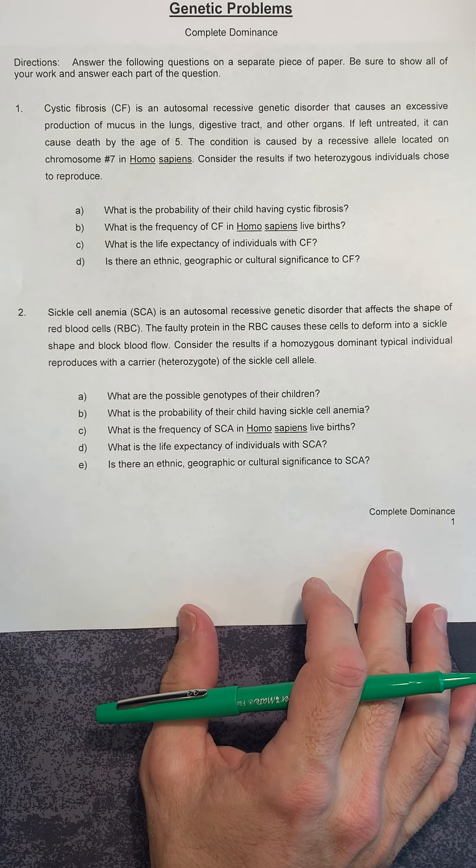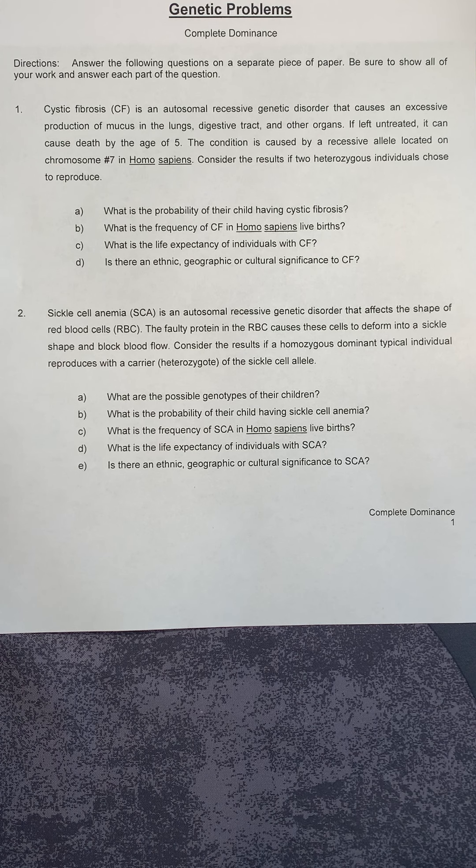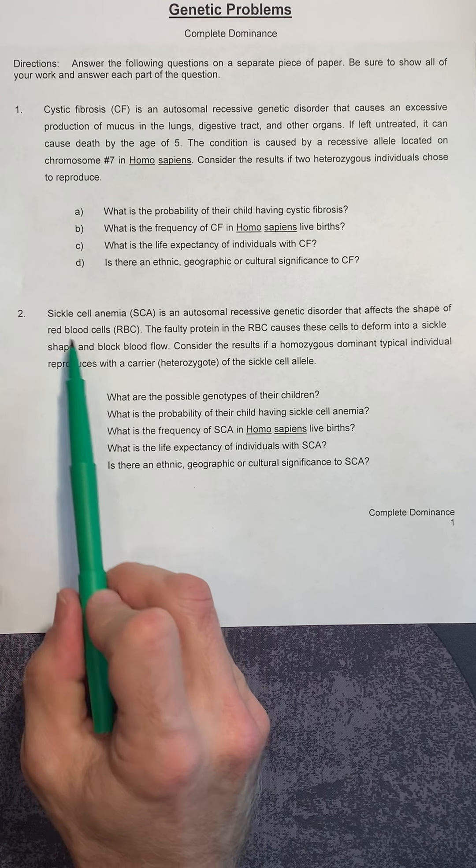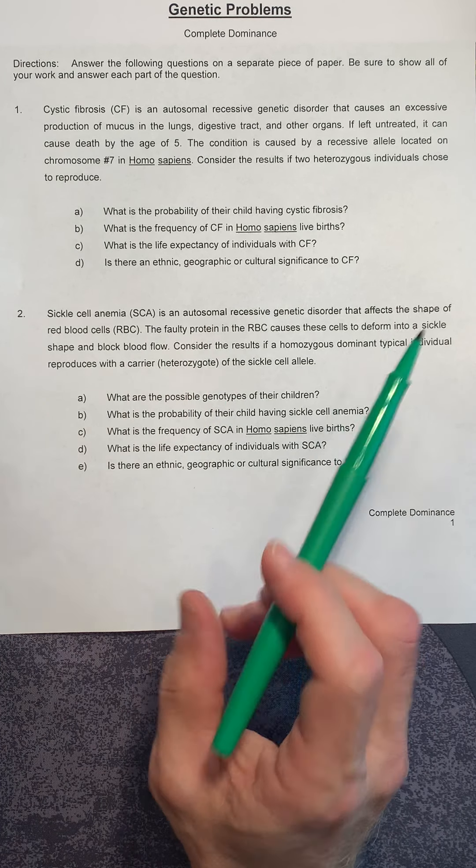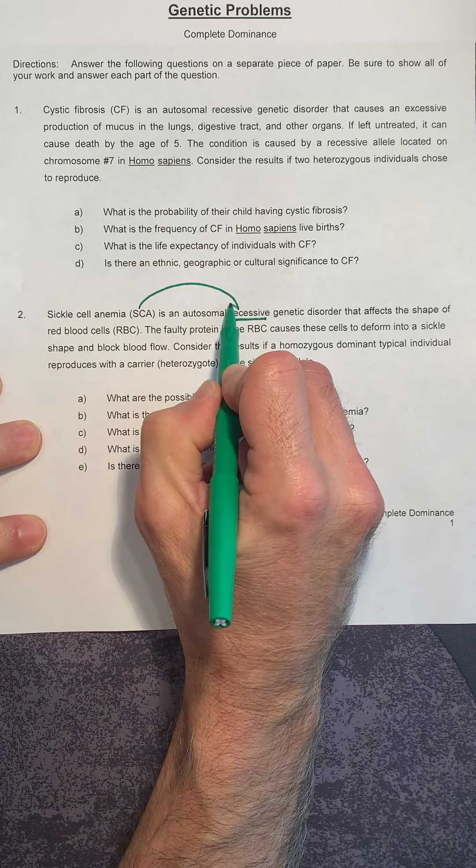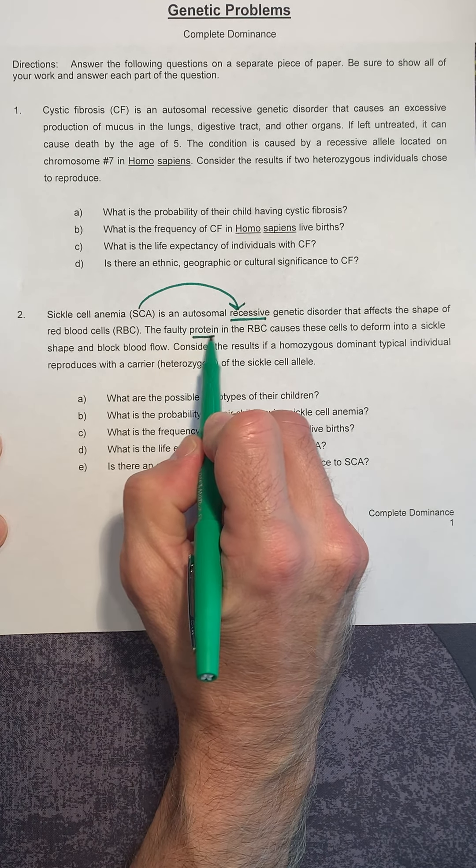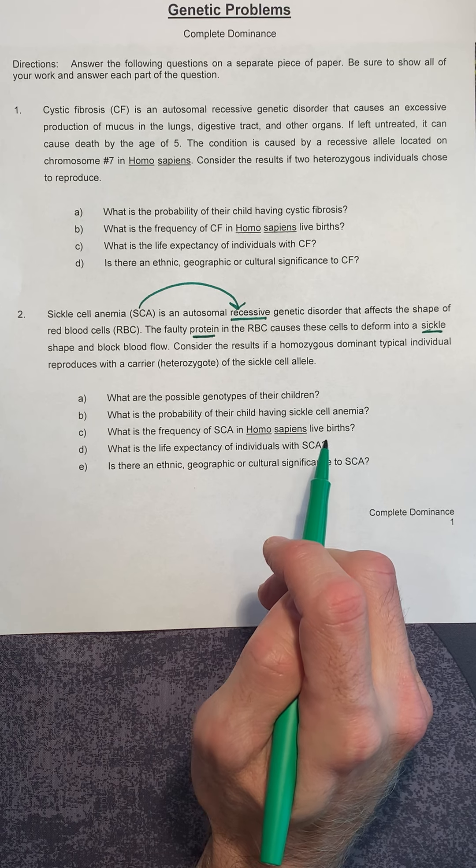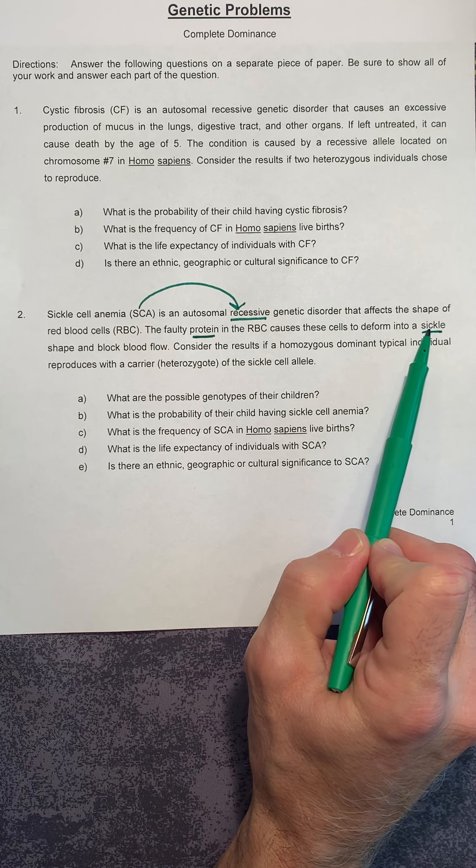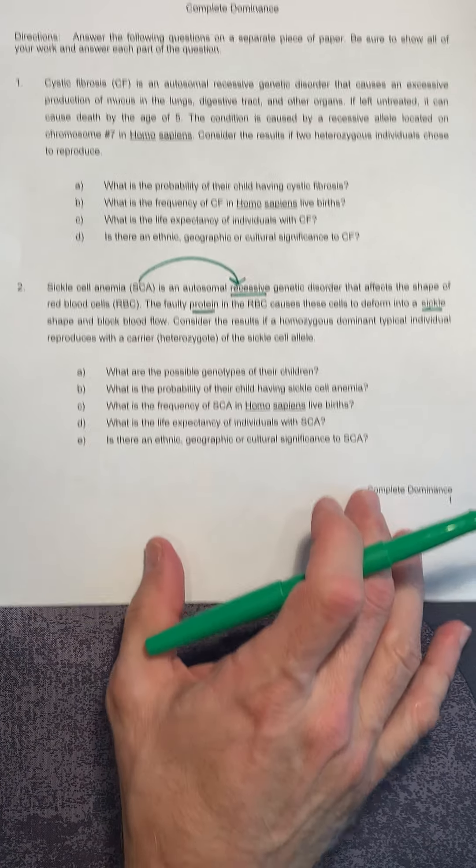So what we're addressing in question number two is a condition called sickle cell anemia. The first step with any genetics problem is to dissect the problem. What is the problem telling us? It says sickle cell anemia is an autosomal recessive genetic disorder. Autosomal means it's on one of the chromosomes between one and 22. It's recessive. That's important. So sickle cell anemia is recessive. It's a disorder that affects the shape of your red blood cells. Faulty protein. The protein doesn't form properly. A faulty protein causes the red blood cells to deform. They form a sickle or curved shape. And this curved shape prevents them from transporting oxygen properly, which causes a condition called anemia. So your anemia is caused by your sickled cells, and so you have sickle cell anemia.